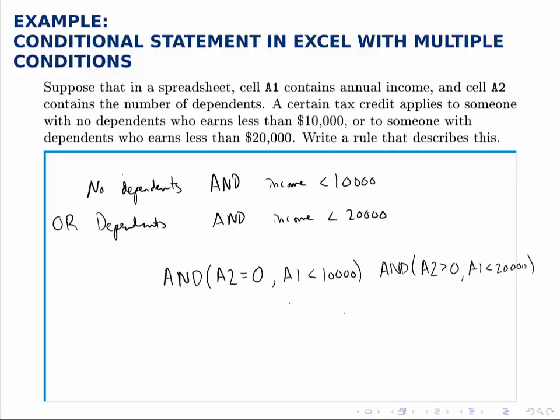The way to combine these two individual AND statements with OR is to use OR where the components are these two individual statements. The syntax is a little bit tricky the first time you see it, but all we've done is create two AND statements: no dependents and income less than $10,000, some dependents and income less than $20,000. Then we've combined those two with OR using this syntax where we type OR and then in parentheses the two statements that we're combining.